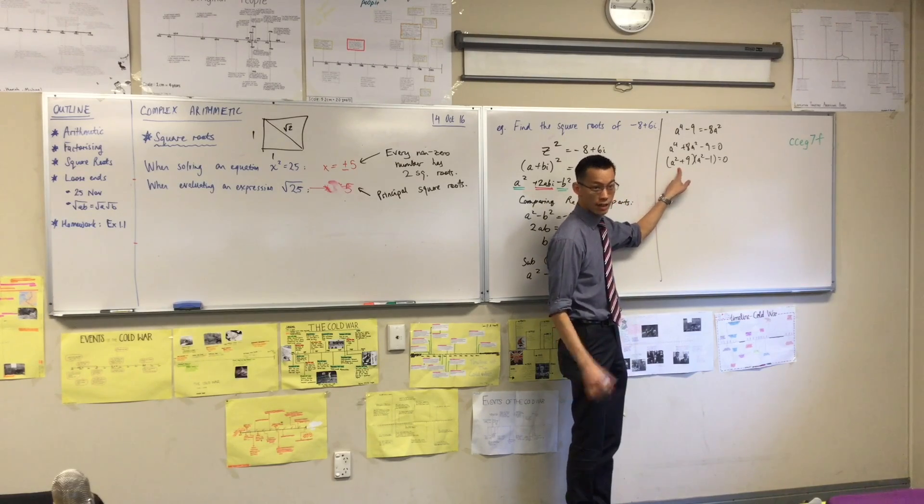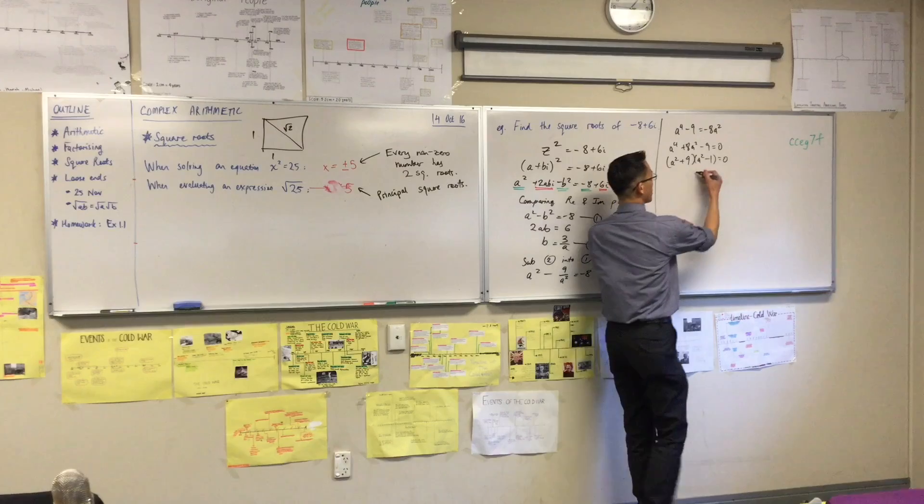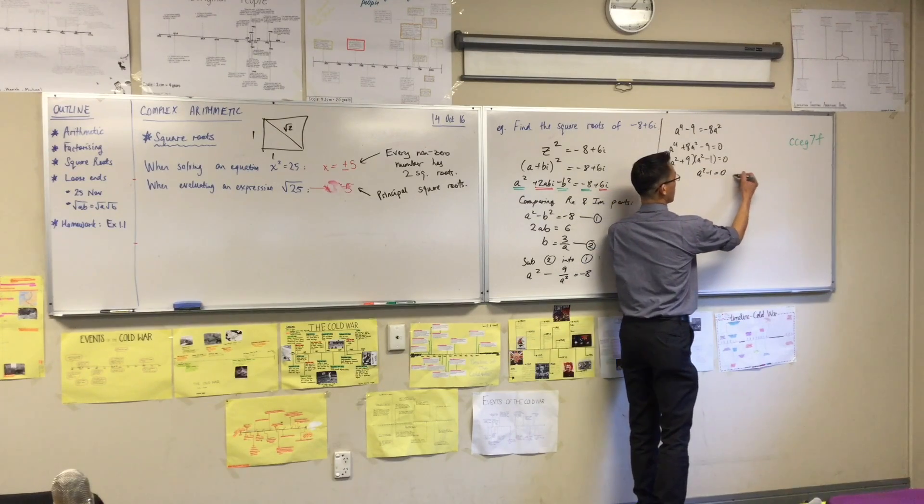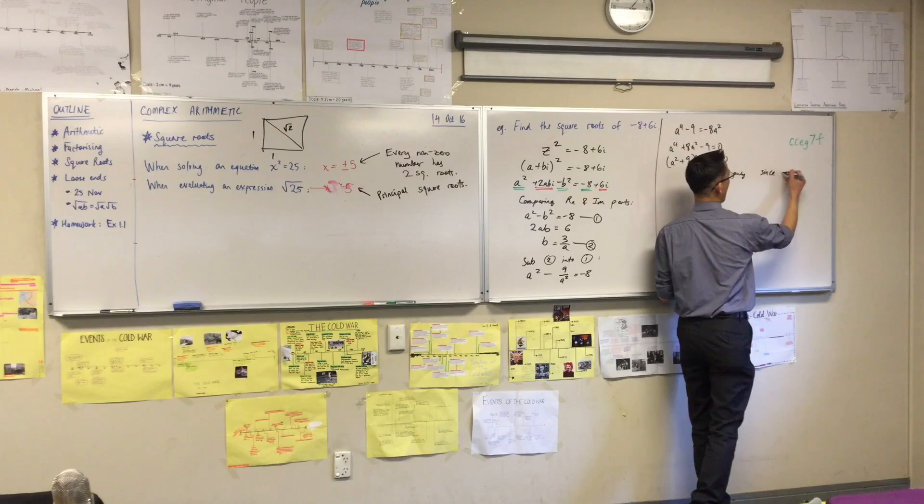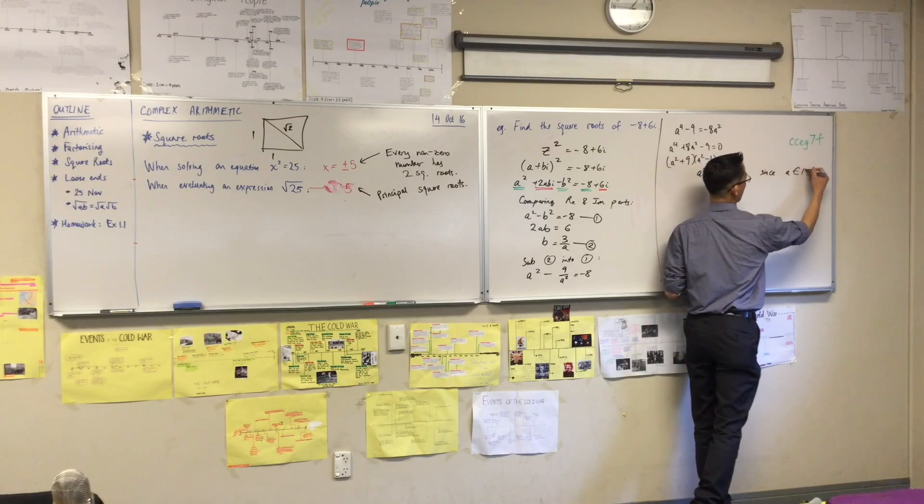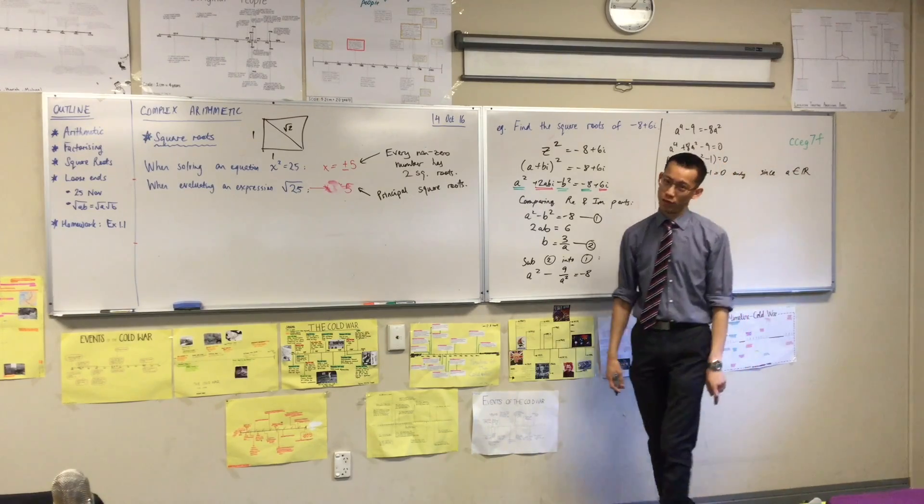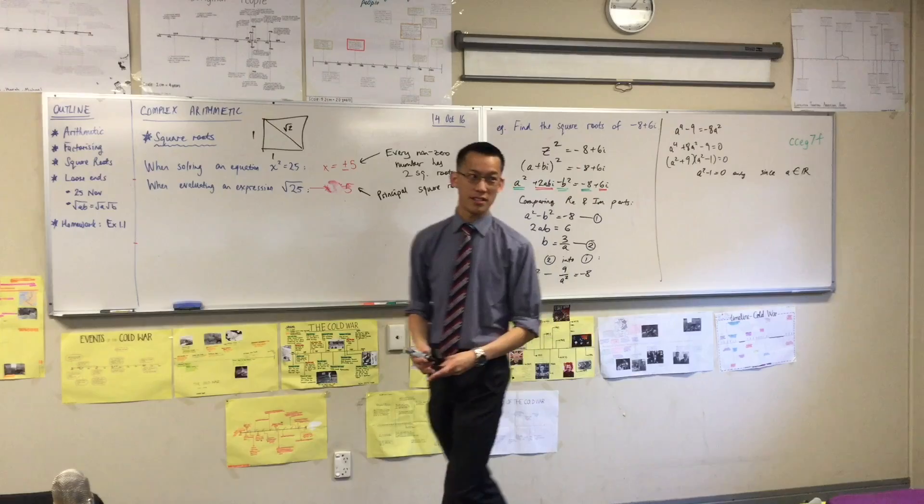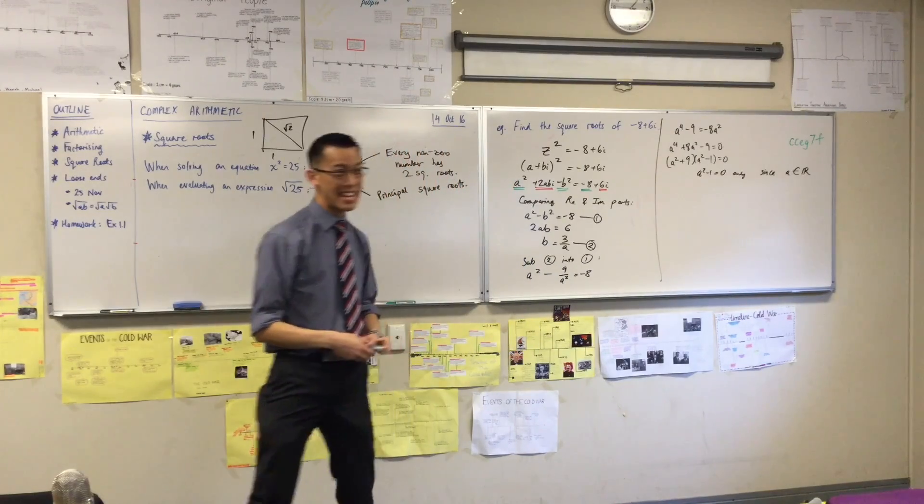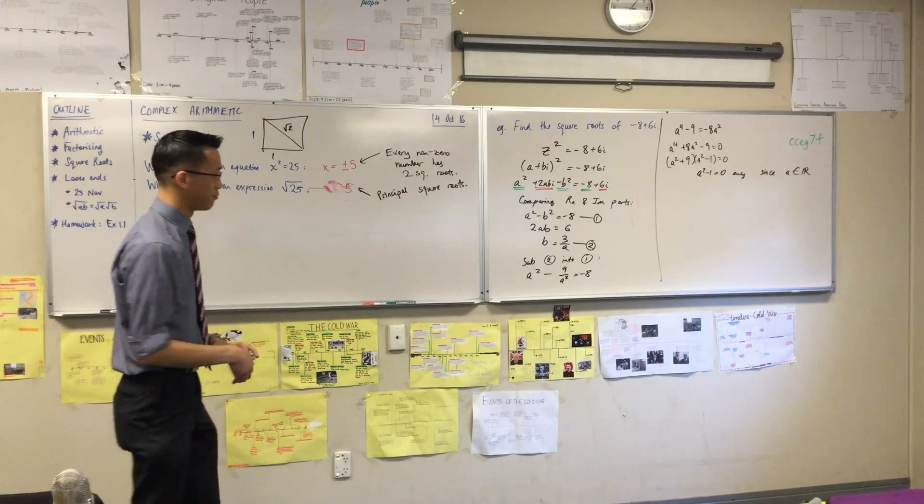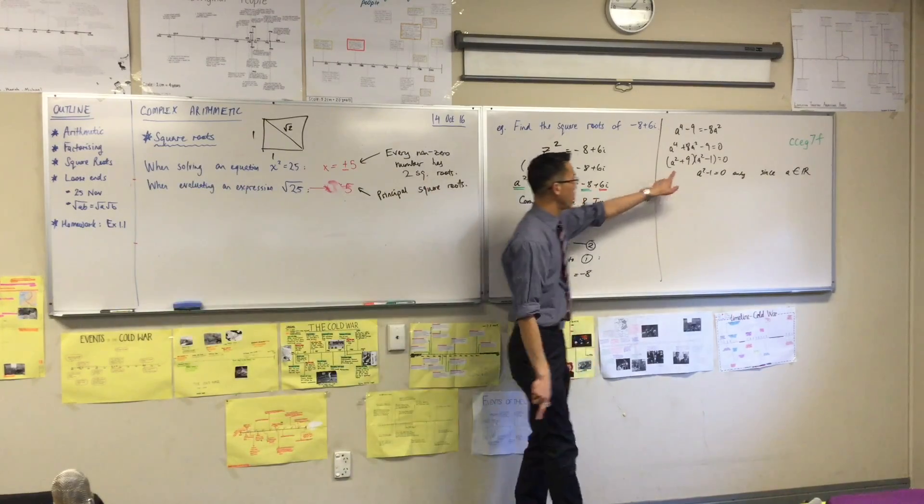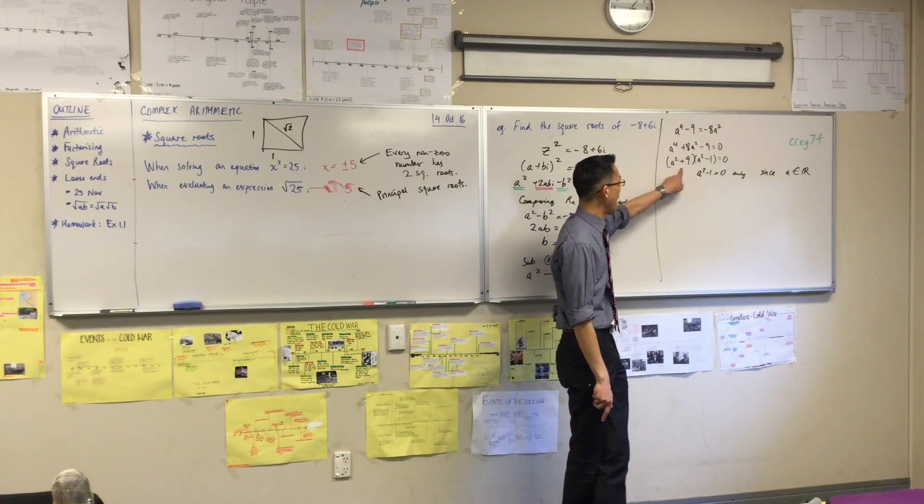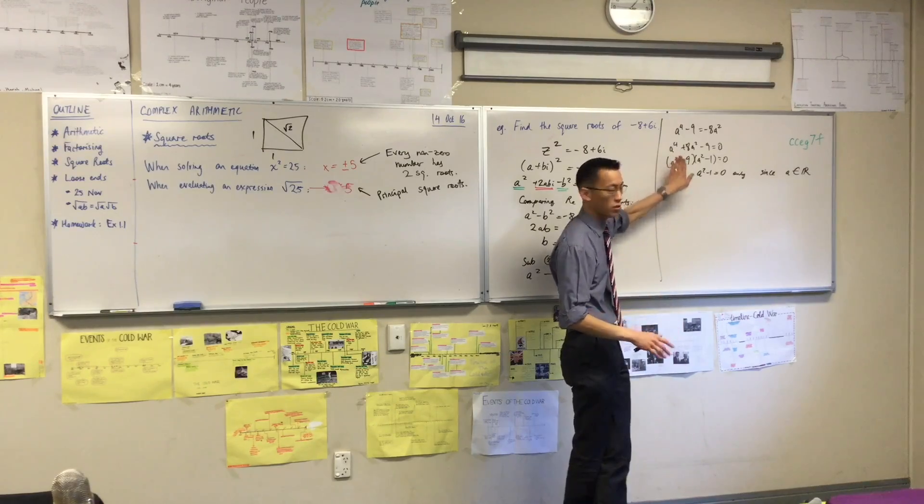This one doesn't give you solutions, right? Because a has to be a real number. So I'm going to say a squared minus 1 equals 0 only, right? Since, and this is a bit of a fancy way to say it. You can say a is a real number, but this is just some notation that says the same thing faster. That's just another way of saying a is a real number. So there's no real number you can square, add it to 9 and you get 0. So that gives you no solution.